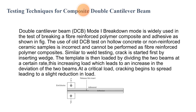The second topic is testing techniques for composites: the double cantilever beam (DCB). DCB mode 1 is widely used in testing fiber-reinforced polymer composites and adhesives. The figure shows the release film insert, adhesives, and end blocks. The use of the DCB test on hollow concrete or non-reinforced ceramic samples is incorrect and cannot be performed as with fiber-reinforced polymer composites.